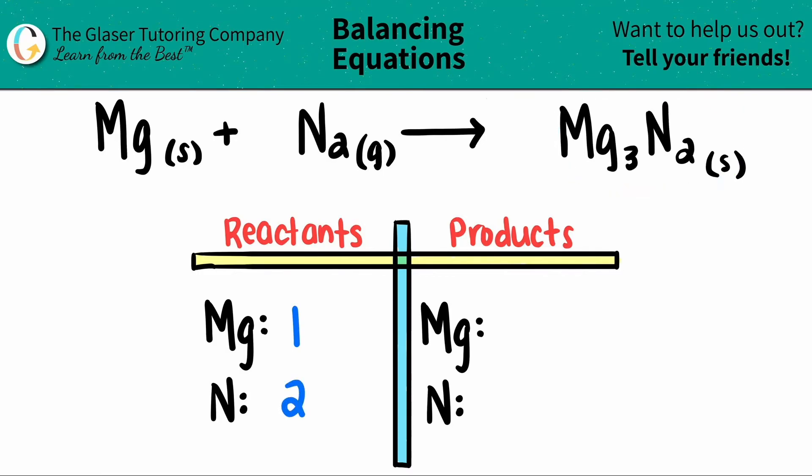Moving to the products, now I see that I have three magnesiums, so I will put a three here, and for the nitrogen, there's a two next door, so that tells me that I have two nitrogens.